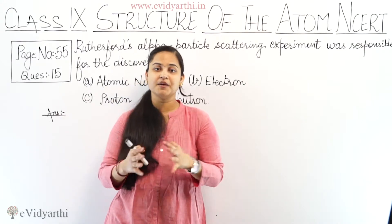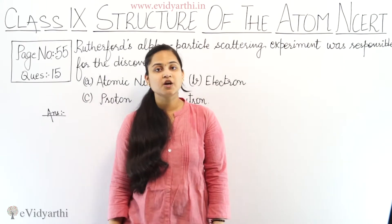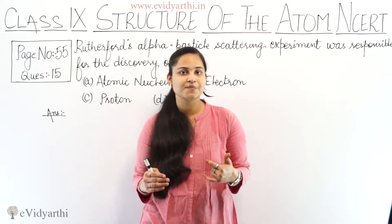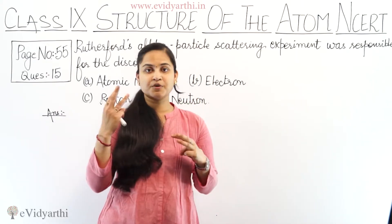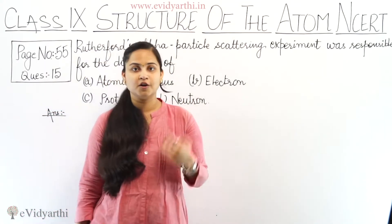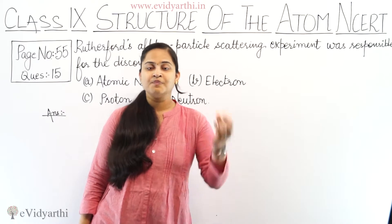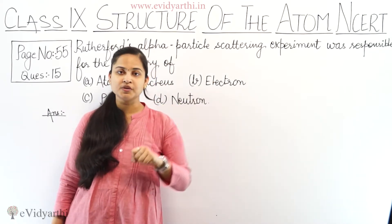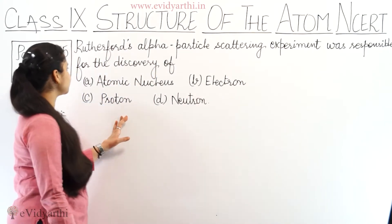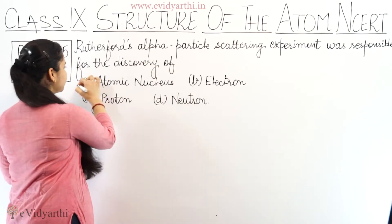The atom's size is very big compared to the nucleus's size. These observations were made when Rutherford conducted the alpha particle scattering experiment. So the conclusion is that Rutherford discovered the atomic nucleus — the positively charged center of the atom — and that the mass of the atom resides in the nucleus. Therefore, Rutherford's alpha particle scattering experiment was responsible for the discovery of the atomic nucleus.